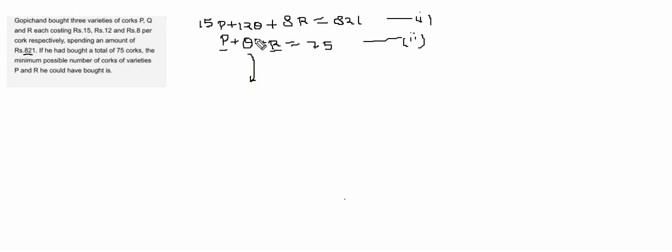So let's eliminate one of the variables from here. Multiply this equation by 8 and first equation minus second equation. That will give you 7P plus 4Q plus 0 equals 821 minus 600, which will be equal to 221.